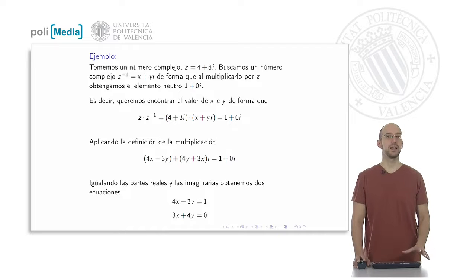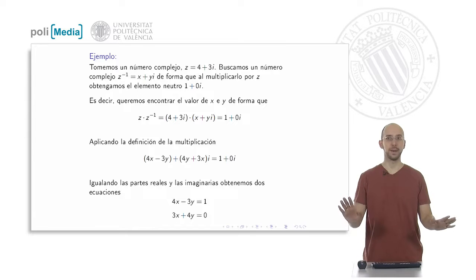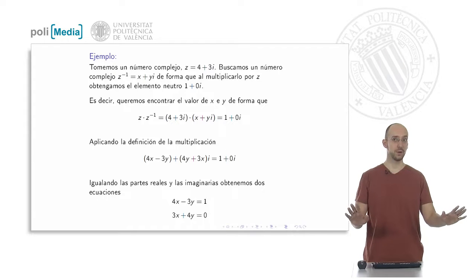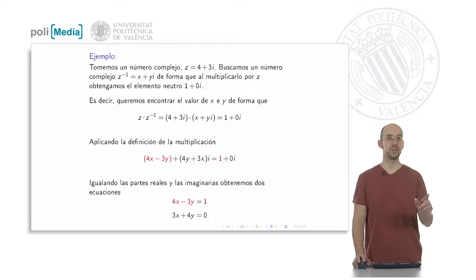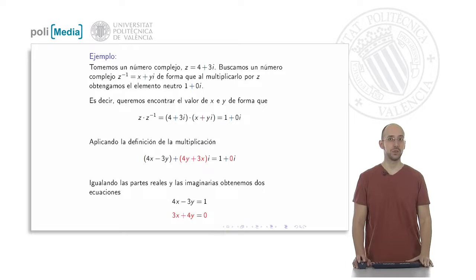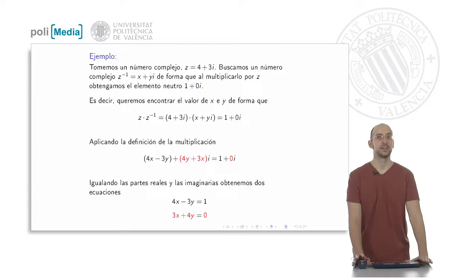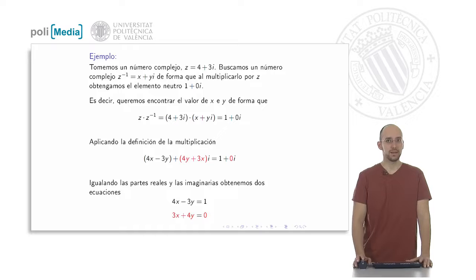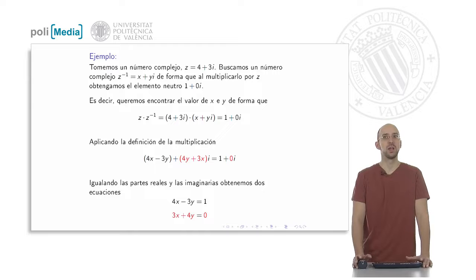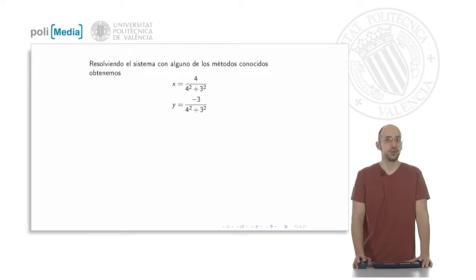Two complex numbers are equal if their real parts are equal and their imaginary parts are equal. That translates into the following equations: 4x plus 3y must equal one, and 4y plus 3x must equal zero. This gives us a system of two equations with two unknowns, which can be solved by substitution, equalization, reduction, Gauss, or Cramer's method.